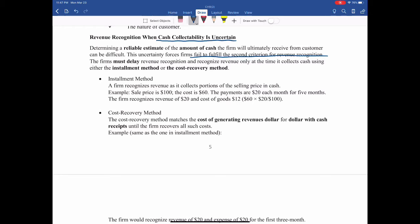One is the installment method. The other is the cost recovery method. If sales price is $100, cost is $60, payment is $20 each month, then each month the firm recognizes $20 revenue and $12 expenses, so the margin is $8 per month. The gross margin $8 divided by $20 is the same as ($100 - $60) divided by $100.